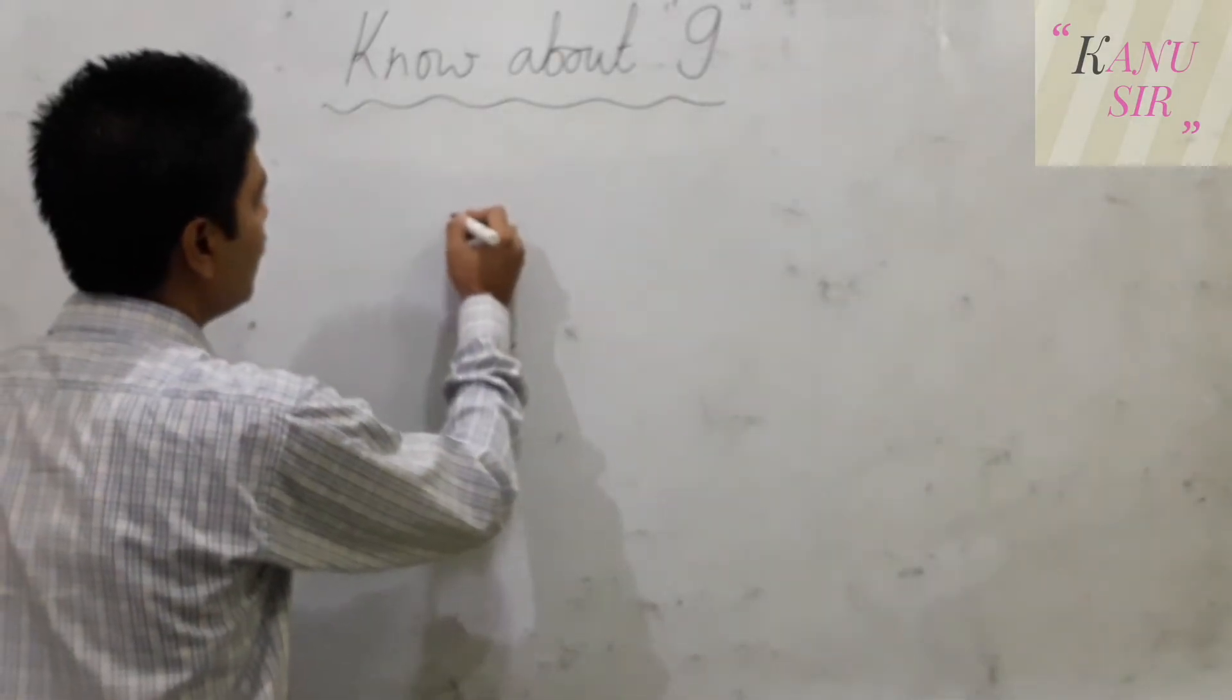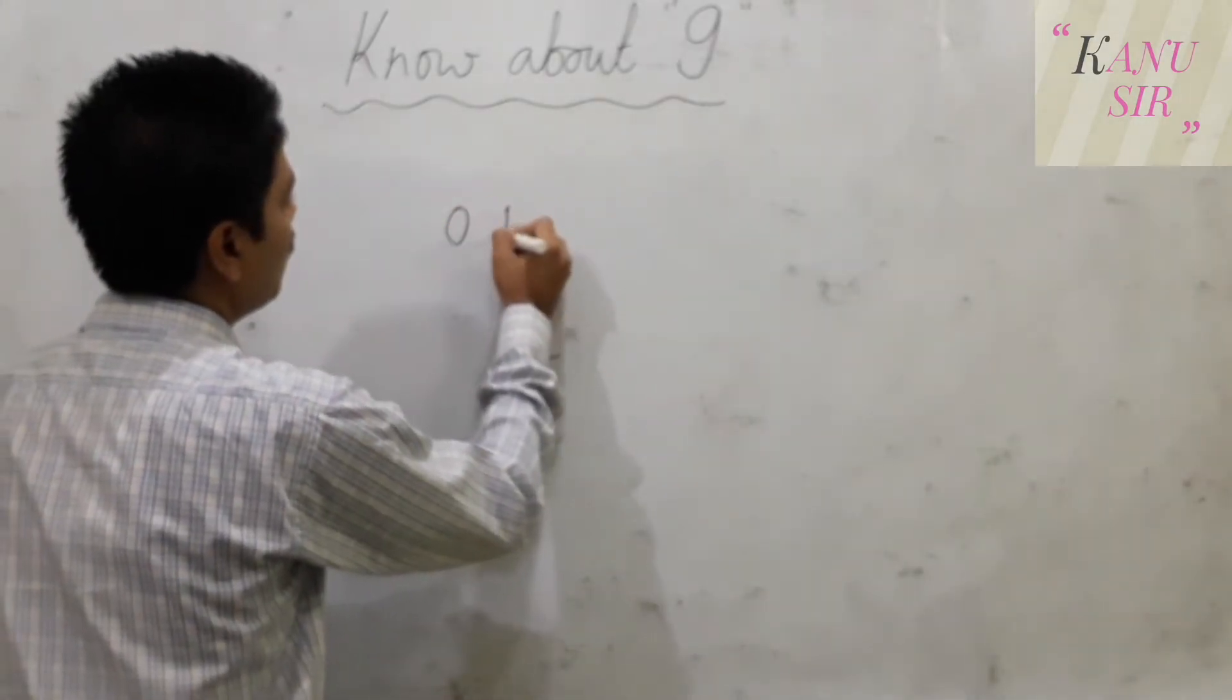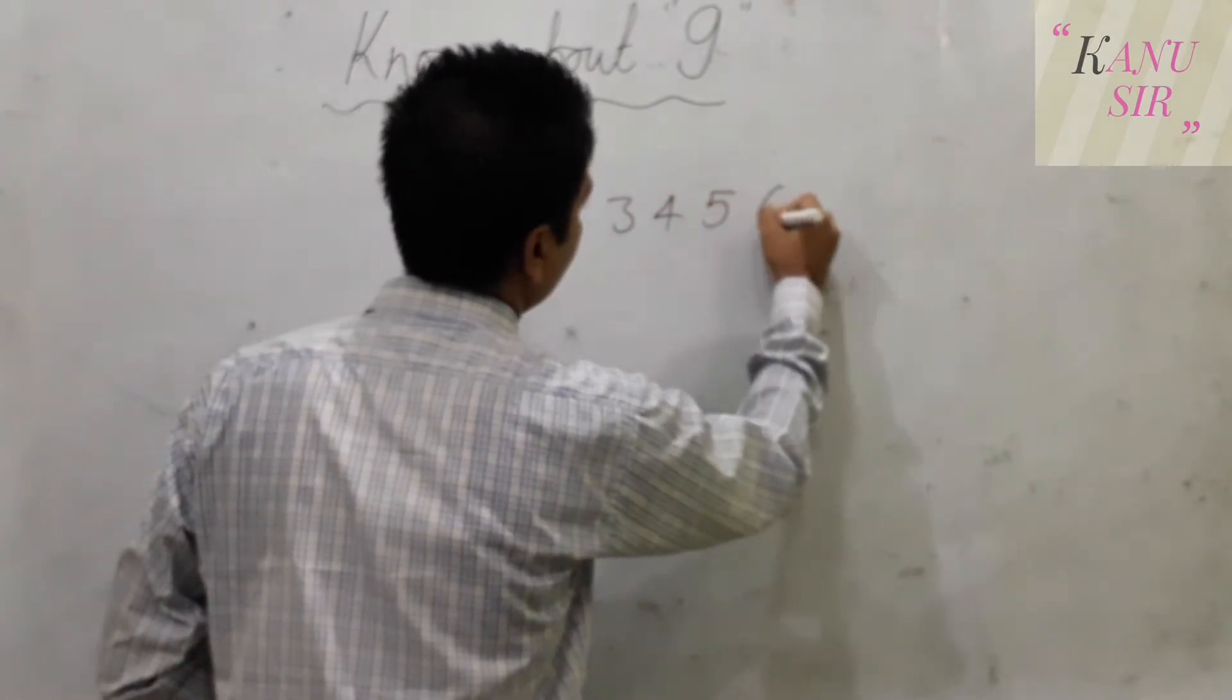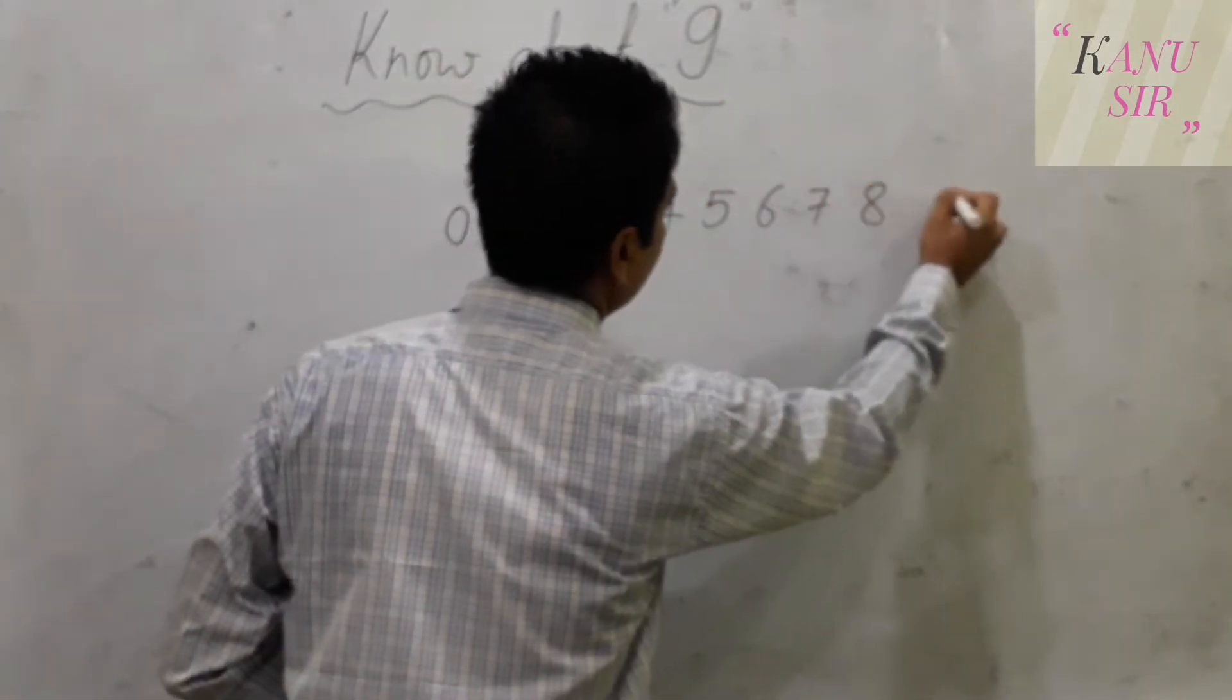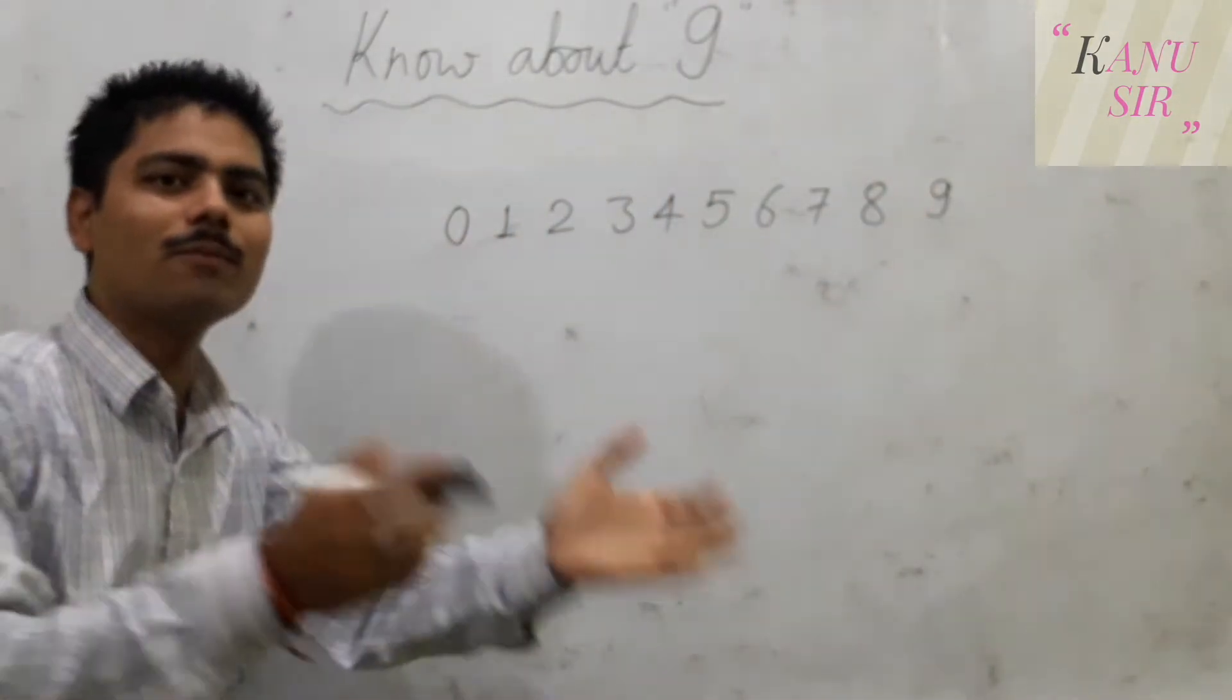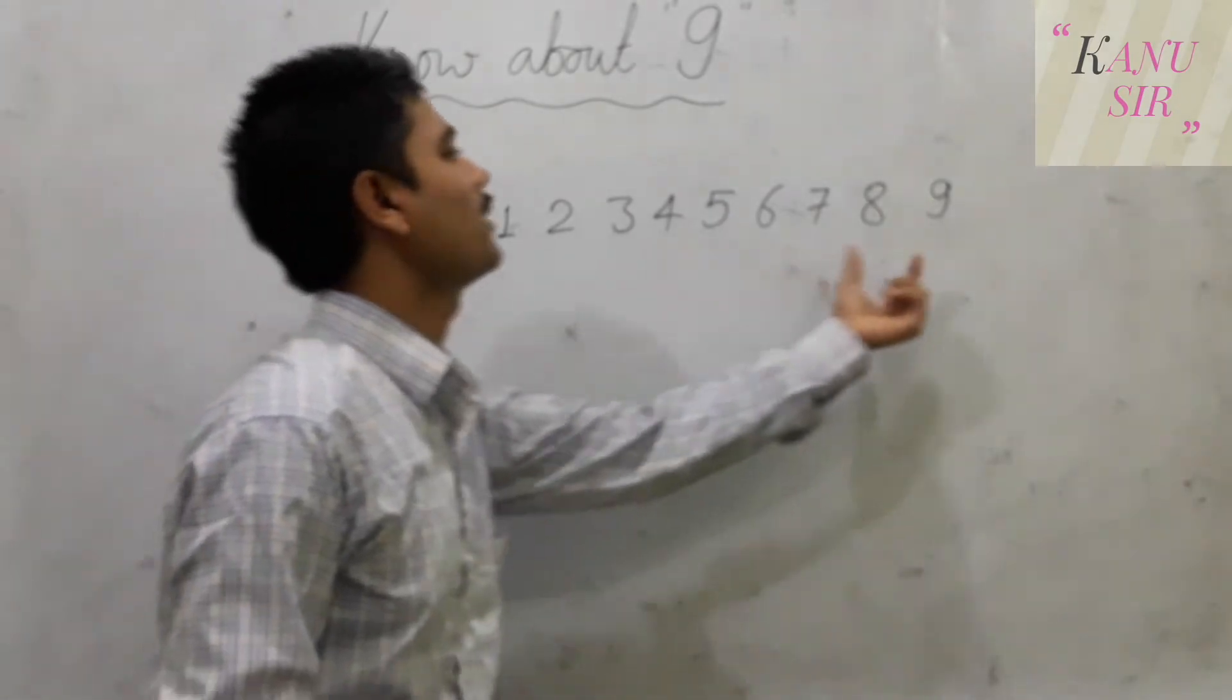Let us write 9 digits. We will write here 0, 1, 2, 3, 4, 5, 6, 7, 8, 9. So when we write 9 digits we count this 0 also and it becomes 10, but mostly we say the digits up to 9.